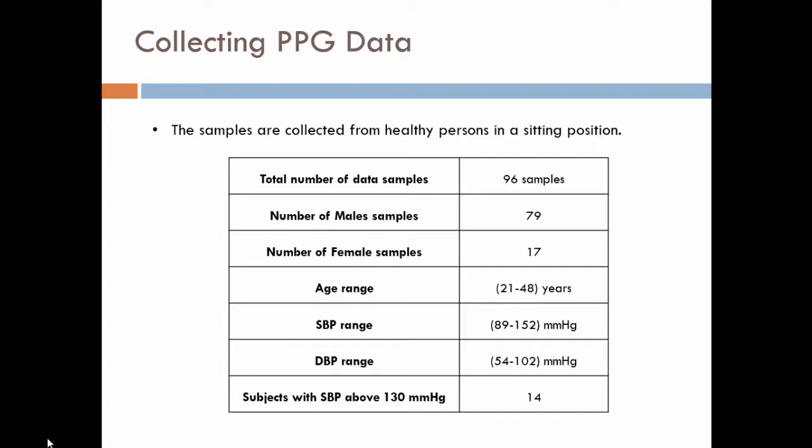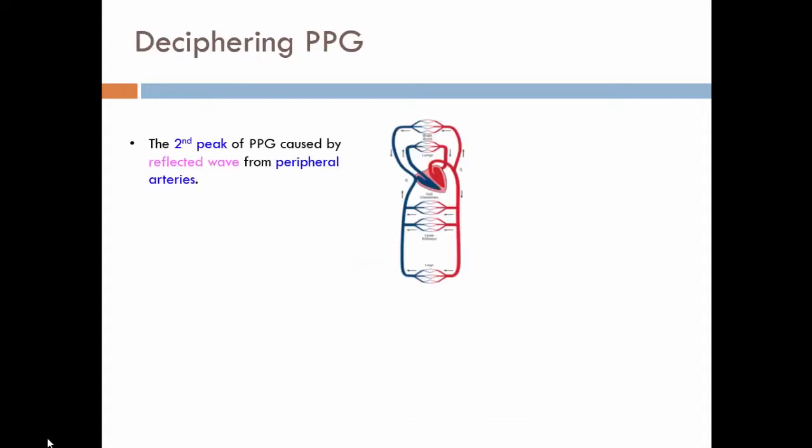So the data we are using for training the neural network model is over here. We have essentially 96 subjects and 79 are males, 17 are female, which is not very well balanced because most of the people we are taking the measurements from are on campus, and in the engineering school, they are mostly male students. So the age range is from 21 to 48, and the SBP range and the DBP range is comparatively wide. And we particularly tried to include 14 subjects with SBP of 130 millimeter mercury.